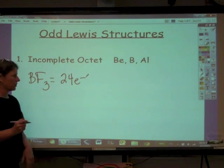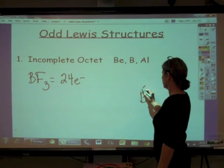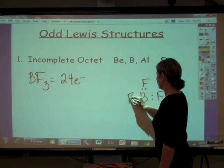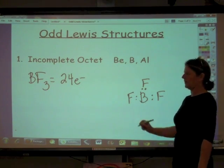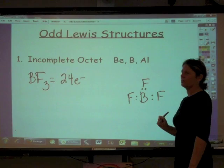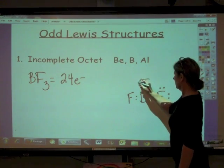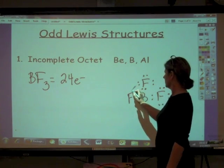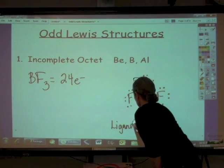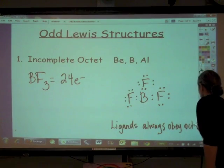So we're going to start with our central atom which comes first. So we'll have B, the boron, and then we've got a bonded pair for one fluorine, a bonded pair for the other fluorine, and a bonded pair for the third fluorine. And then what we're going to do is we're going to fill in for our ligands because ligands always obey octet. Always.